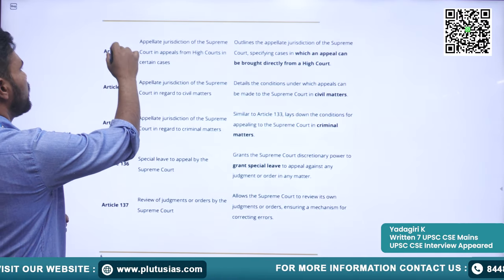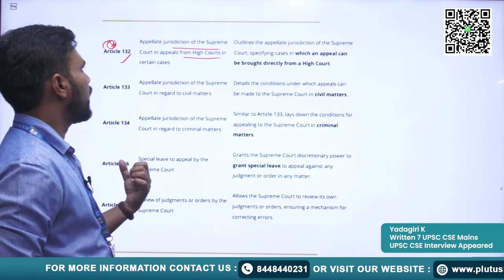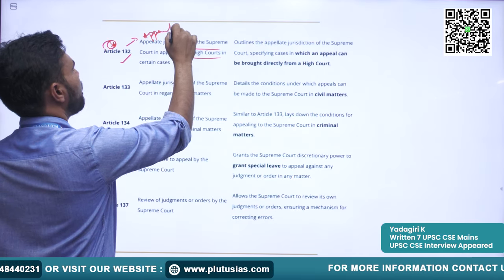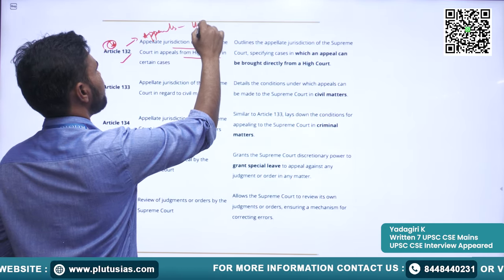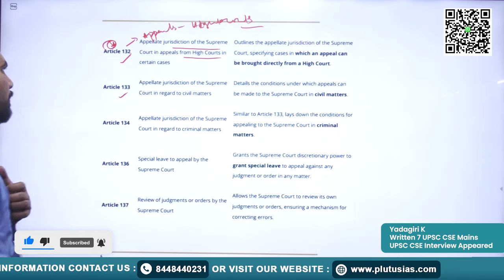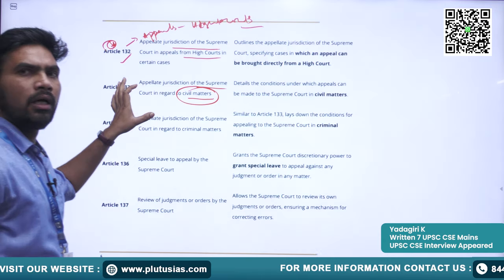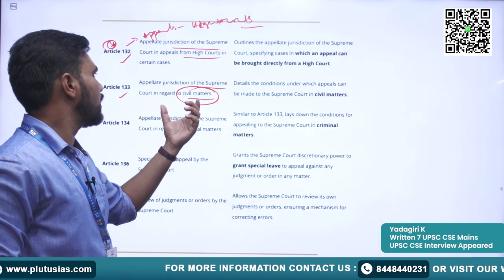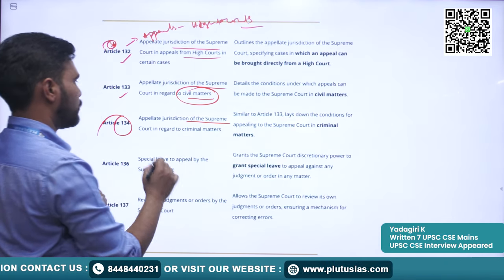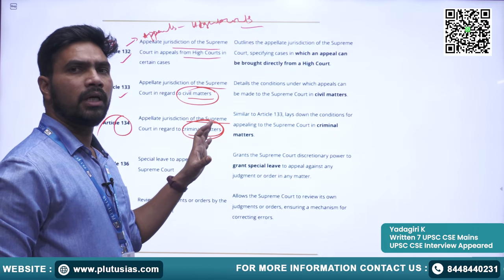Article 132 is also very important — Appellate Jurisdiction of the Supreme Court in appeals from High Courts in certain cases. It basically looks into appeals from High Courts. Article 133 covers Appellate Jurisdiction of the Supreme Court with regard to civil matters. Article 134 covers the Jurisdiction of the Supreme Court with regard to criminal matters and appeals coming from criminal aspects.